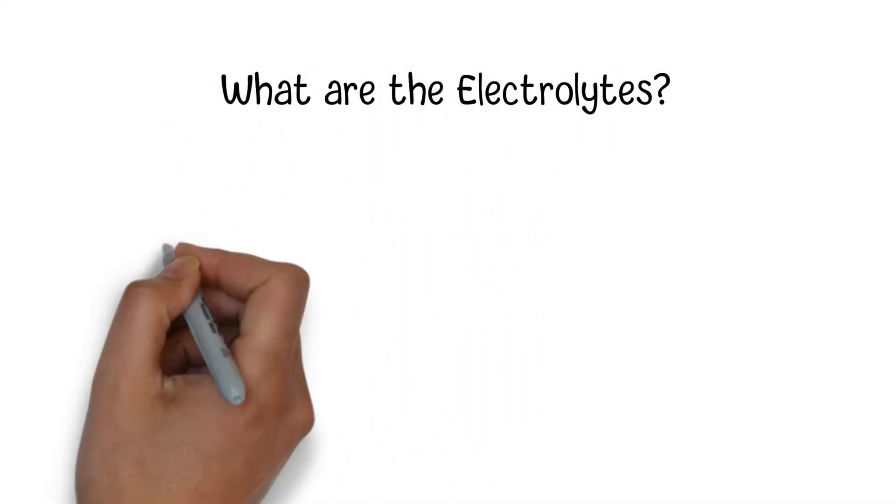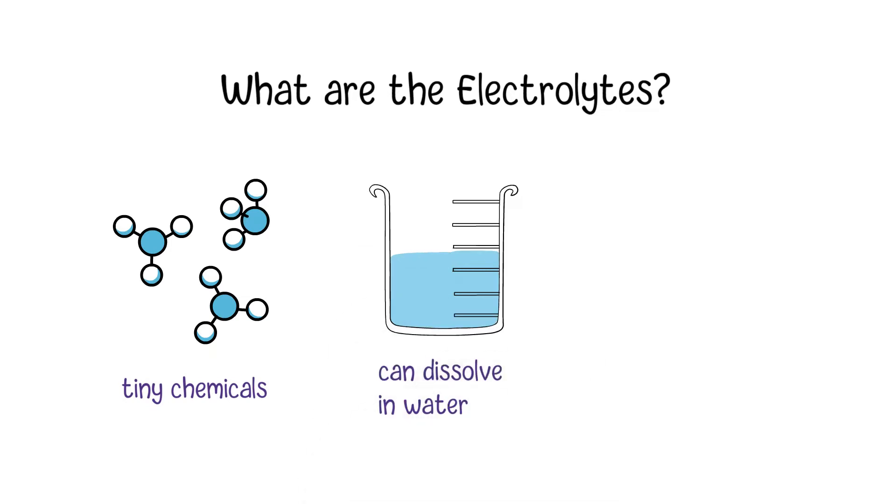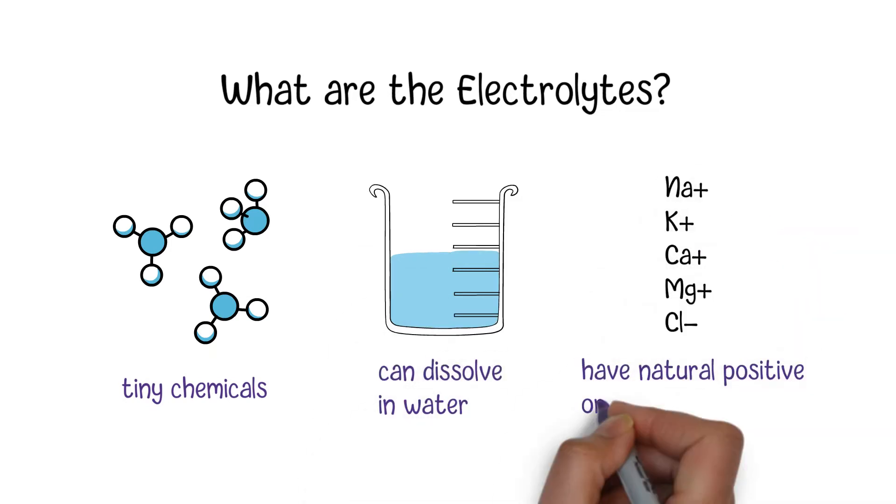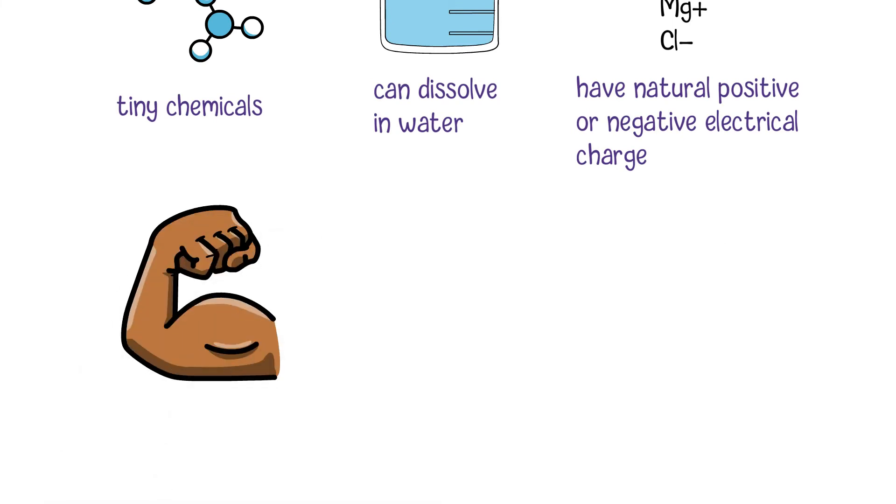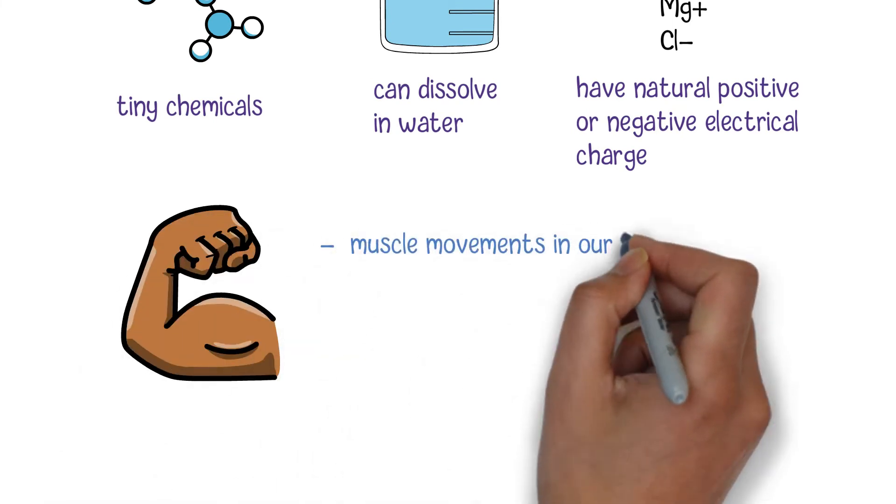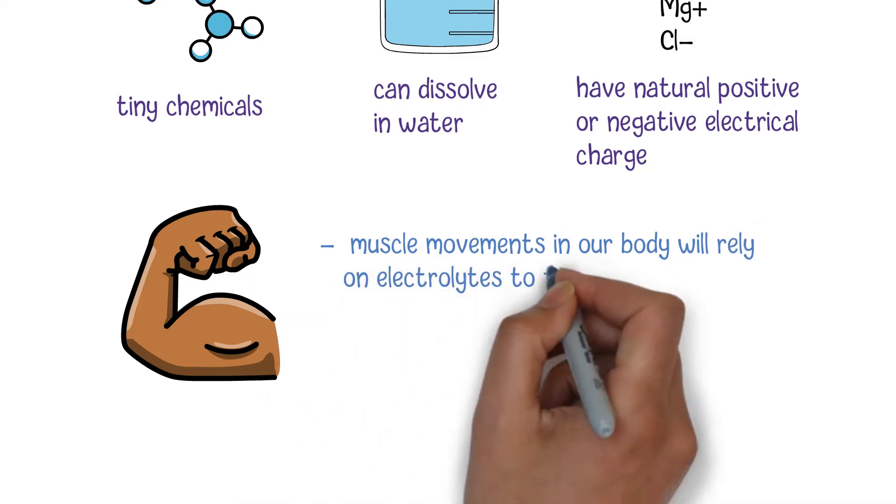Electrolytes are tiny chemicals in our body which can dissolve in water and have natural positive or negative electrical charge. All of us need electrolytes to survive because many automatic processes such as muscle movements in our body will rely on electrolytes to function.